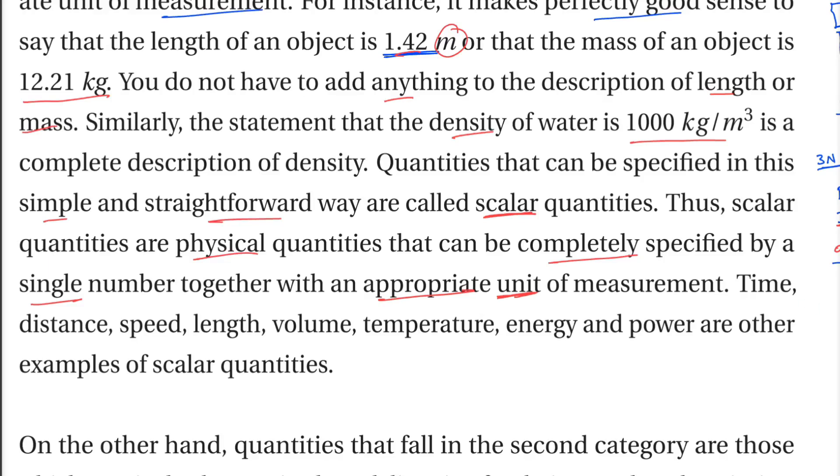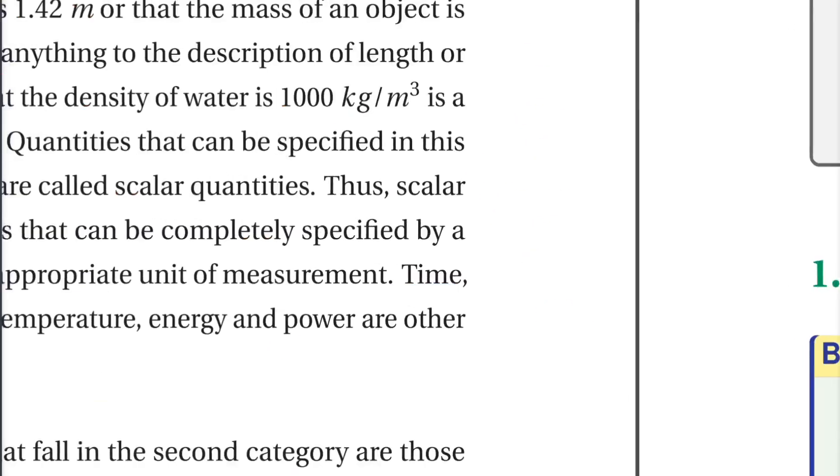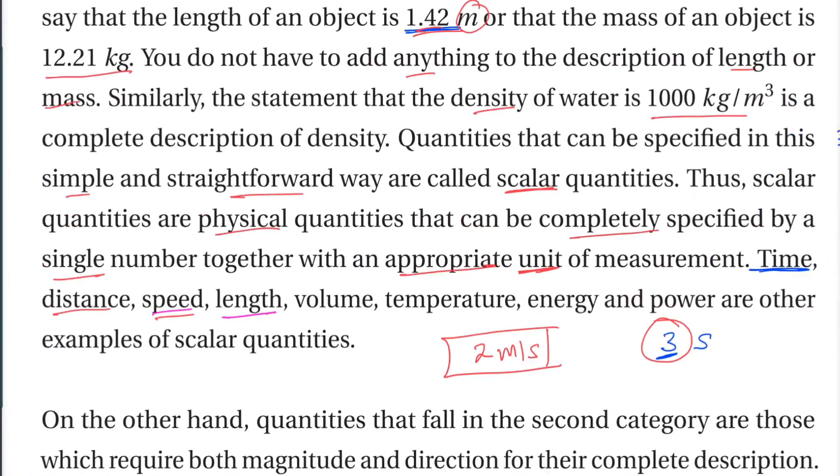So scalar quantities: time 30 seconds, magnitude, distance 1.42 meter, speed 5 meter per second is speed, 9 meter per second is speed. Length, volume, temperature, energy, power are scalar quantities.